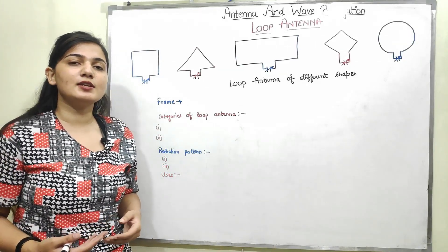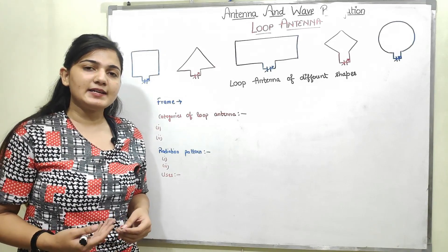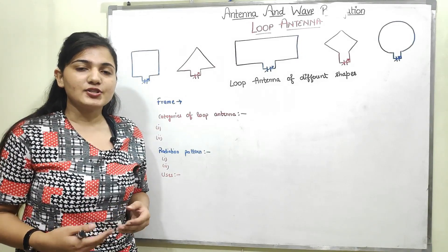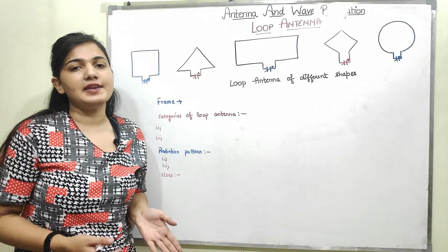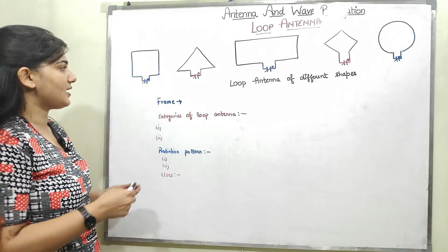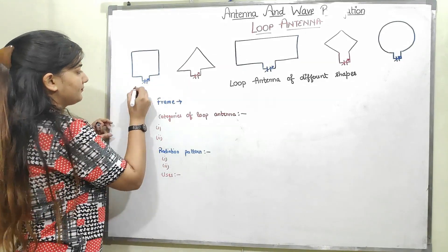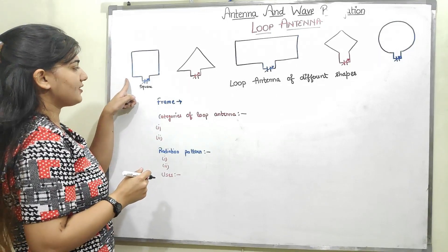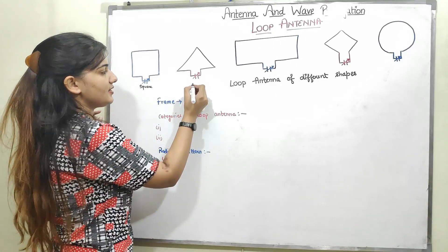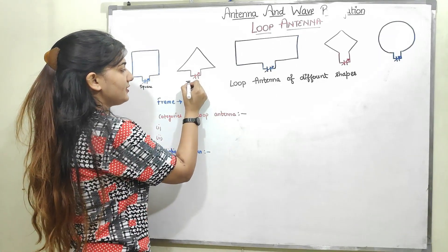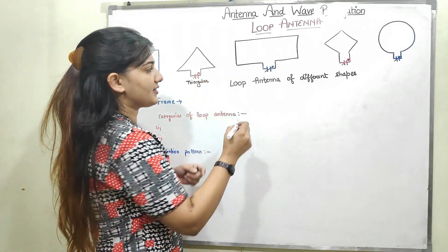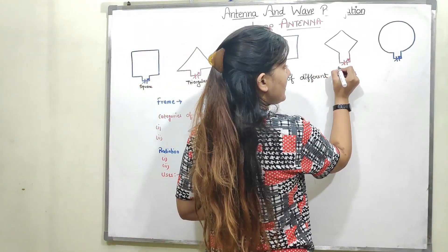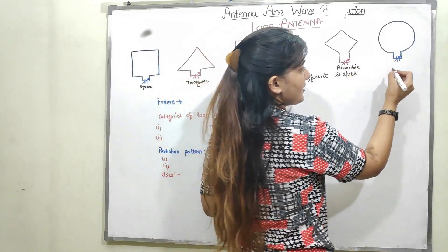A loop antenna is a radiating coil which can be of any shape. The shapes include square, triangular, rectangular, rhombic, and circular.